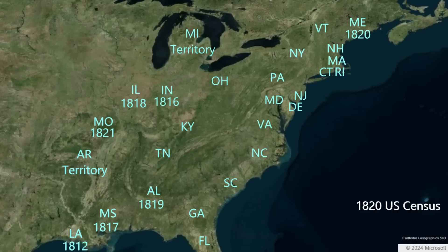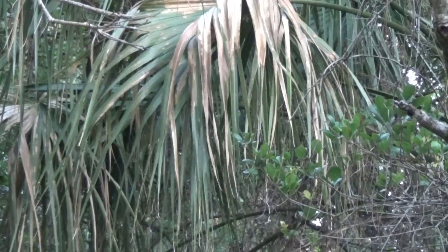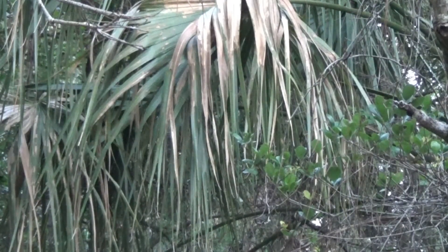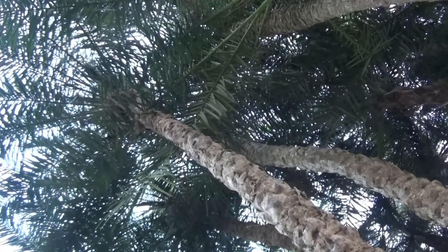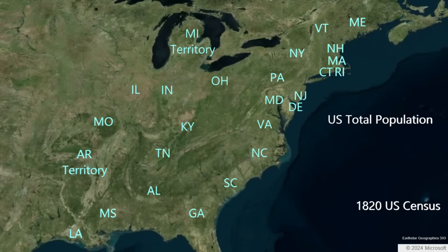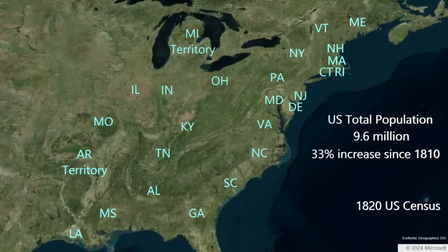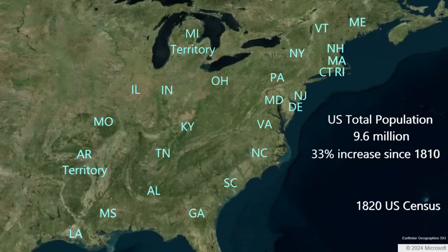Yet another boundary was set to expand in 1820. At this time, Florida's status was in transition from Spain to the United States — negotiations were in process for Spain to cede Florida, with the promise that Spain would retain Texas. Spain had been in Florida for over 250 years at this time. The total population of the United States in 1820 was 9.6 million people, having increased 33% since the previous census in 1810. We will go through the states and territories in descending order by population.